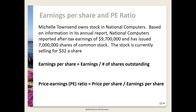Let's calculate earnings per share and the price-earnings ratio. Michelle Townsend owns stock in National Computers. Based on information in its annual report, National Computers reported after-tax earnings of $9,700,000 and has issued 7 million shares of common stock. The stock is currently selling for $32 a share. For earnings per share, we take our earnings and divide by our shares: 9.7 million divided by 7 million gives us $1.39.